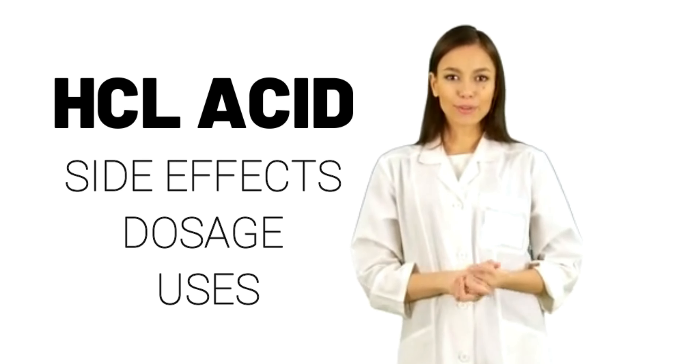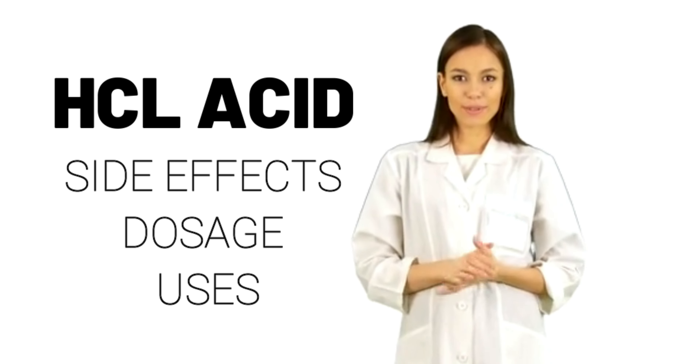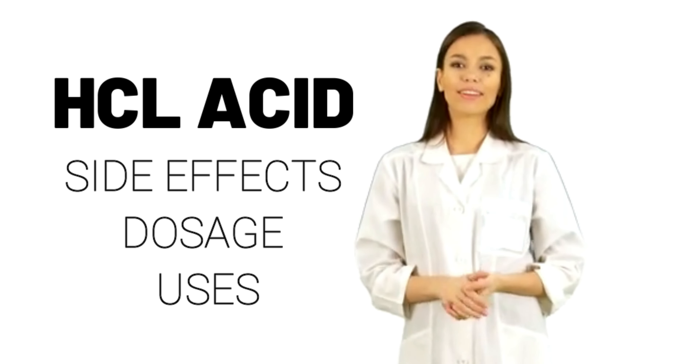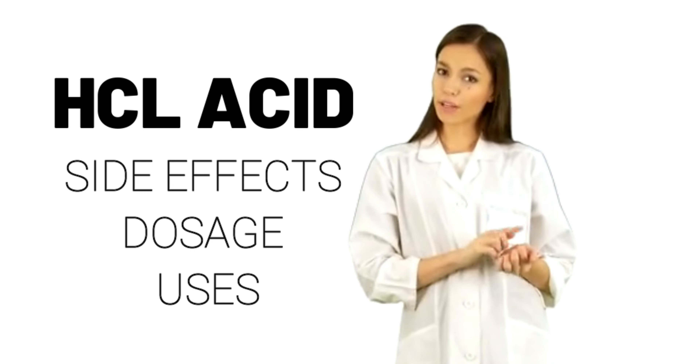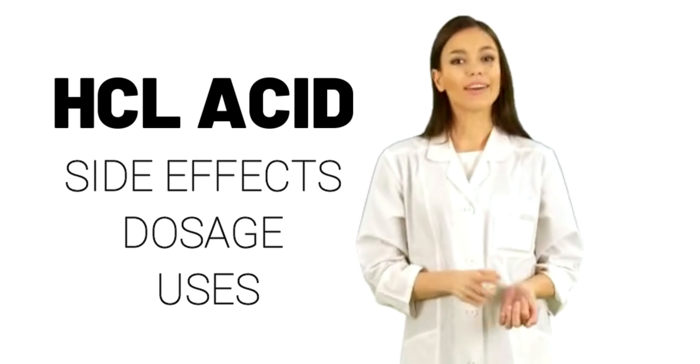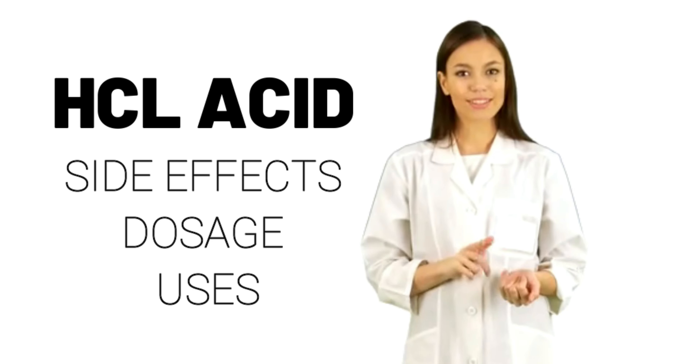Bleaching agents: hydrochloric acid is used as a bleaching agent in food, textile, metal, and rubber industries.